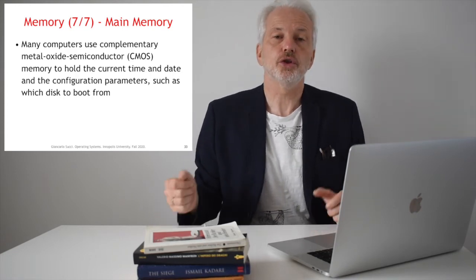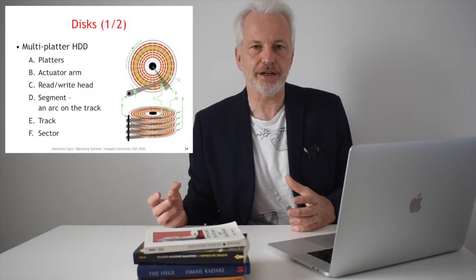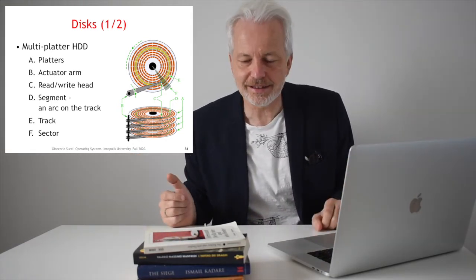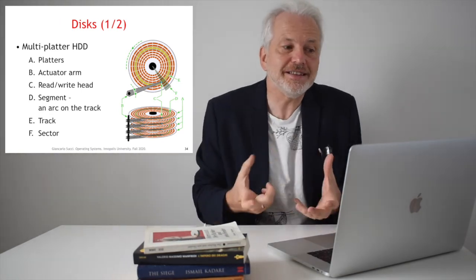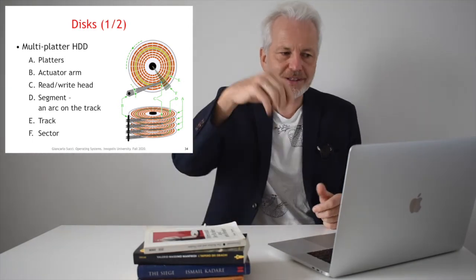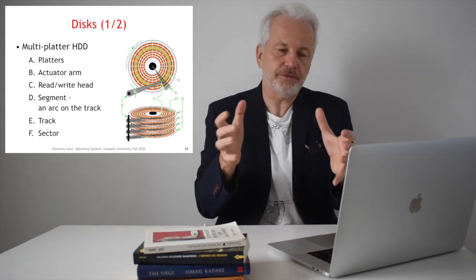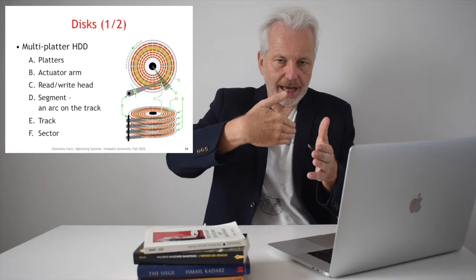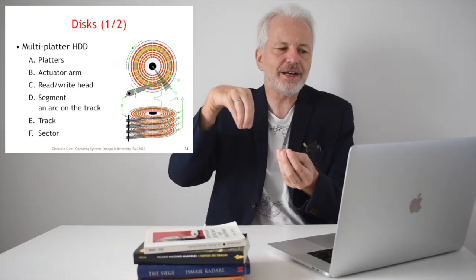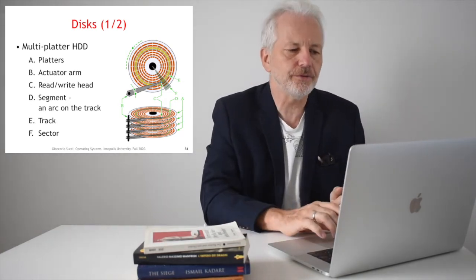Disks are like old vinyl or CD disks — platters, typically multiple ones stacked on top of each other. A disk has an actuator arm that moves read/write heads. Data is organized into tracks and sectors within those tracks. Disk access involves a seek time to physically position the head, a rotation delay for the disk to rotate to the required position, and a transfer time to move the data.